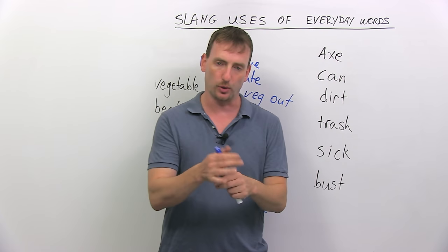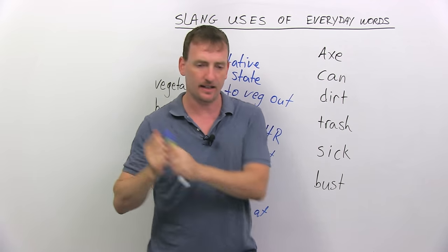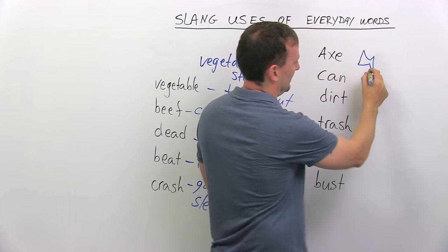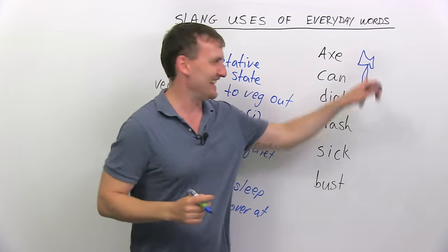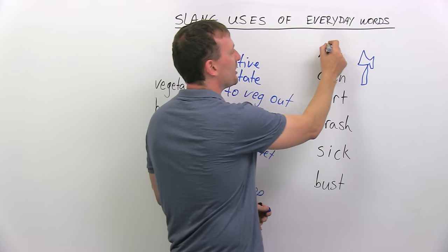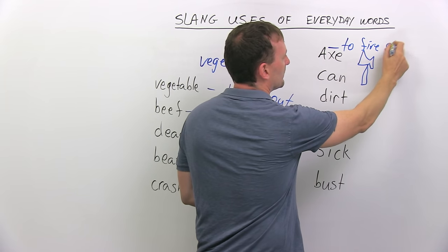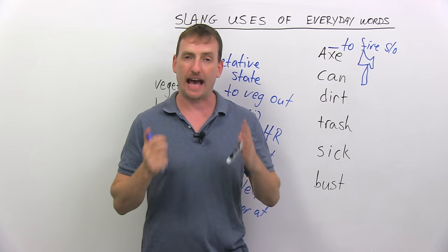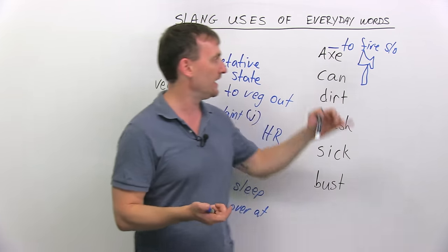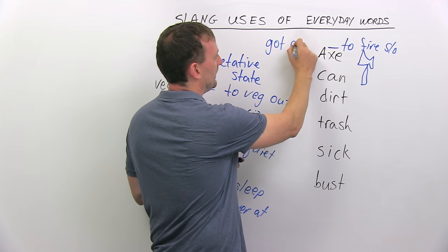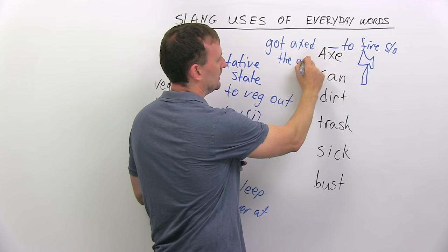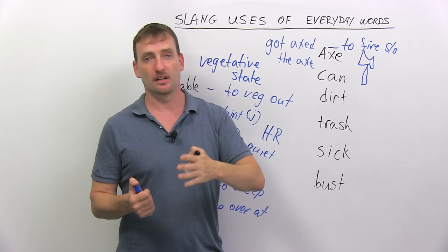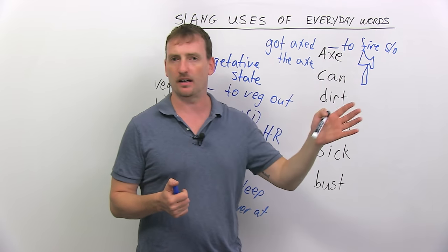Axe. Now, an axe is a tool — it's like a long stick with a sharp metal piece on one side, and you use it to cut trees. But axe also means to fire someone. So the company is going to axe a thousand jobs — axe means to fire, to let somebody go. Somebody got axed, or got the axe, means somebody lost his or her job. You actually hear this quite a bit in sports: the team is doing very badly, and finally the coach got axed.